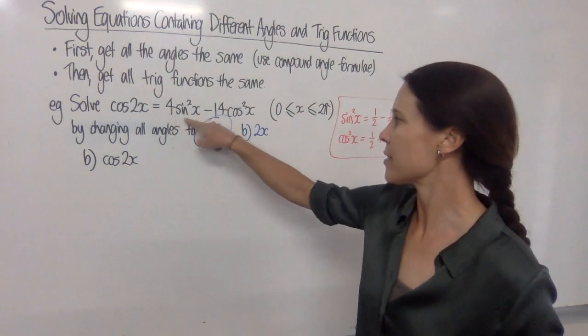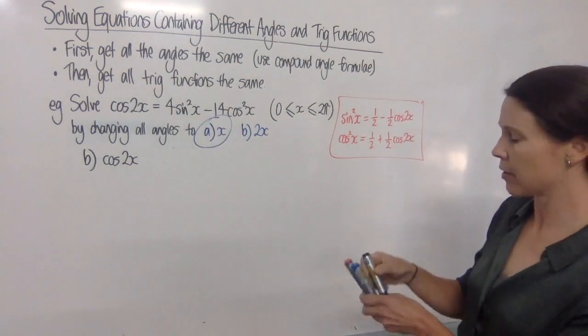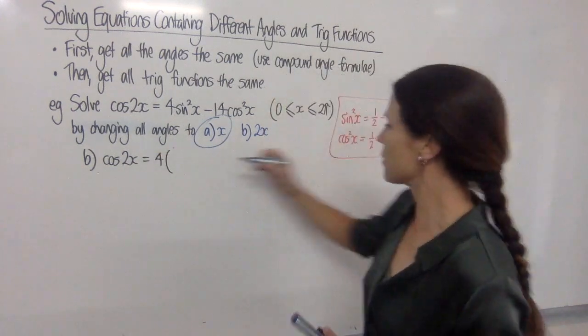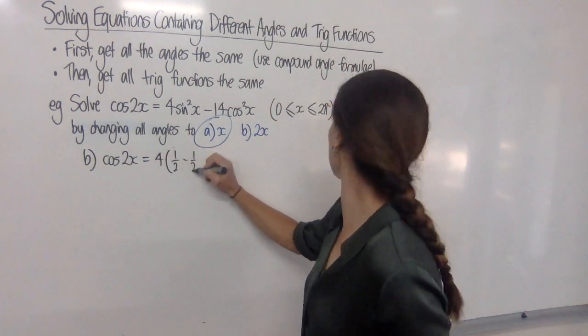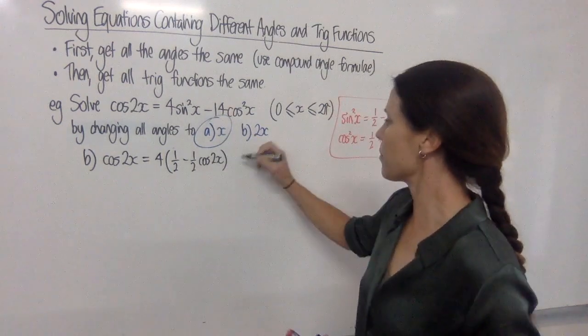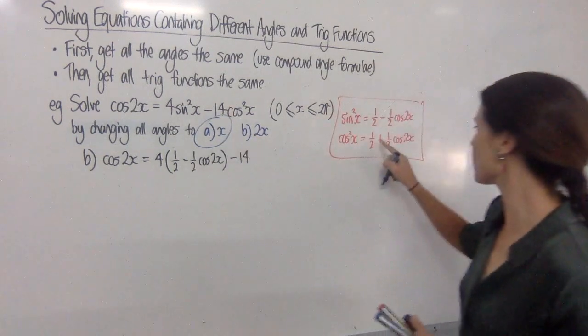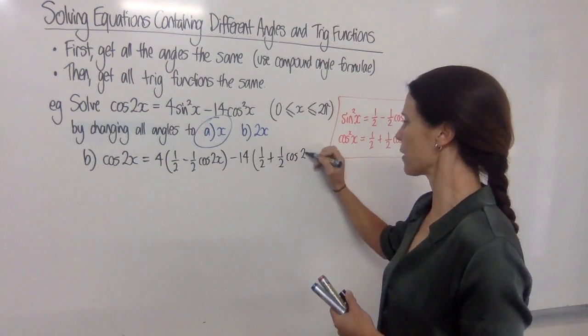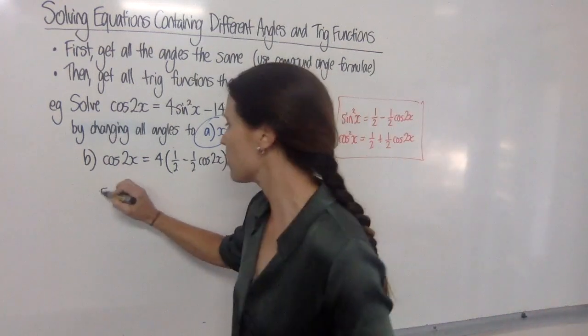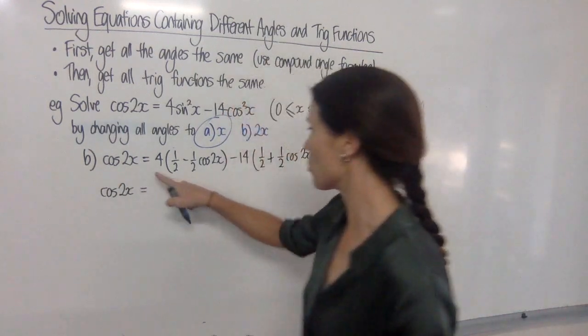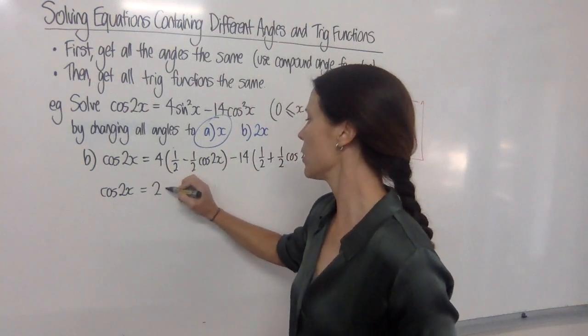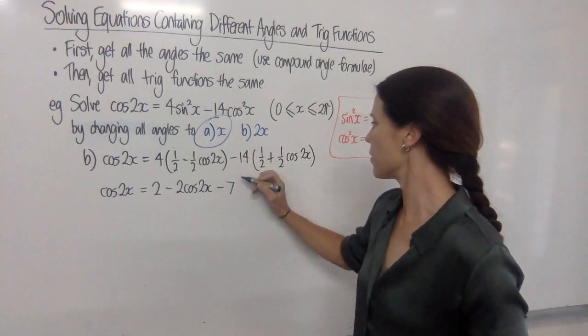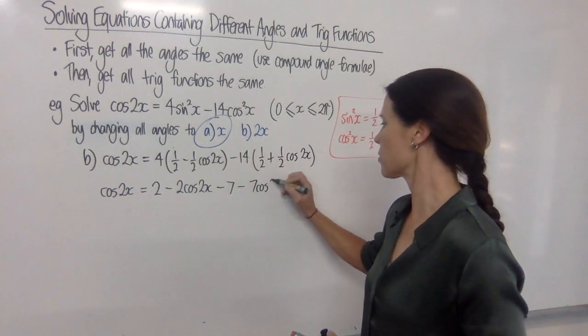So now over here I can replace sin squared x with all of this, being careful not to make a sign error, because I need to have four lots of that half minus a half cos 2x, and I'm subtracting 14 lots of this, a half plus a half cos 2x. Okay, so tidying up, we've got one lot of cos 2x is equal to half of 4 minus 2 cos 2x. And here we've got minus 7, minus 7 cos 2x.